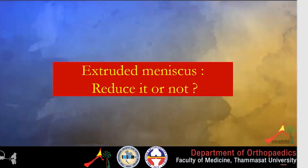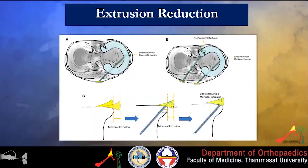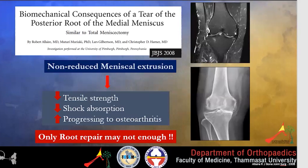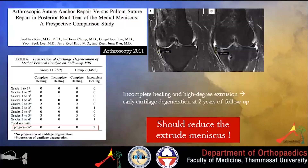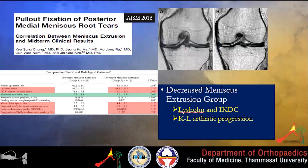Should we reduce an extruded meniscus and how? If we do not reduce meniscus extrusion, this will result in decreased tensile strength, decreased load absorption, and increased progression to osteoarthritis. Good repair alone may not be enough in such cases. This paper suggests we should reduce the extruded meniscus if the patient has a high degree of extrusion. The meniscus may not heal and this will lead to progression of cartilage degeneration at two-year follow-up. Therefore, we should reduce the extruded meniscus.